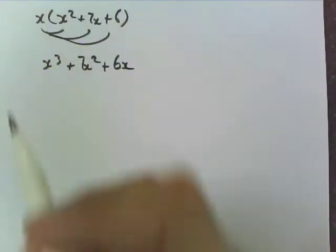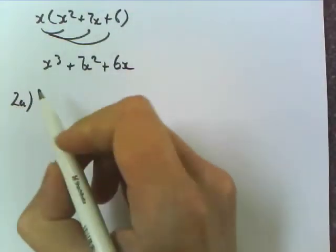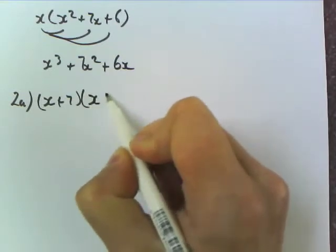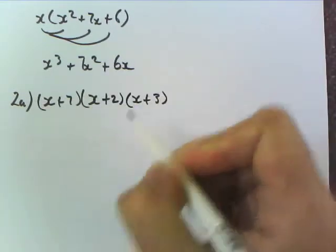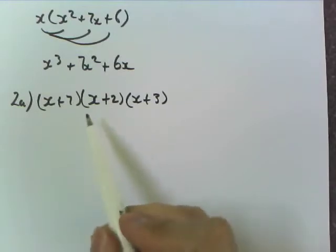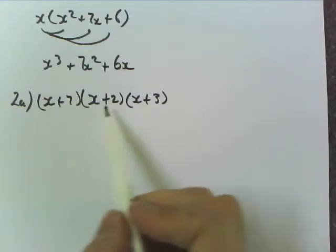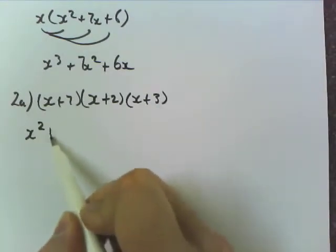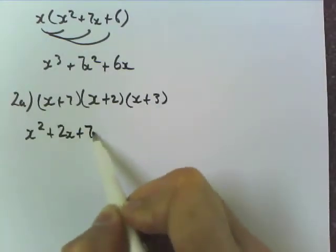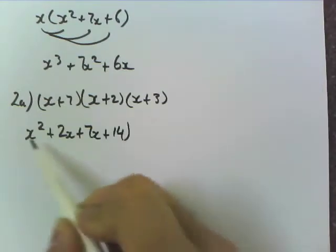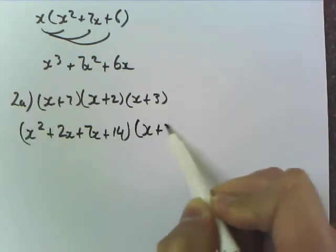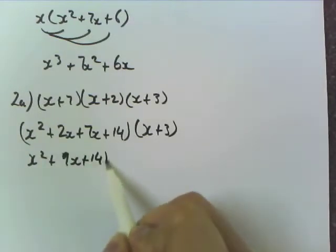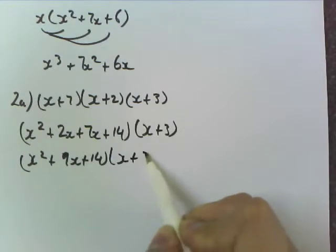It may get a little trickier if you look at question two. You get x plus 7, x plus 2, x plus 3, and then you just do FOIL on one set and keep the other set. So I'll do FOIL on the first set here and keep the third set for later. So we just end up with x squared plus 2x plus 7x plus 14, with x plus 3 still on the end. x squared plus 9x plus 14, x plus 3.